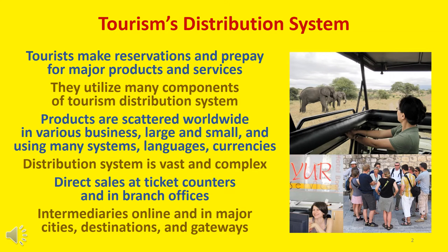Because tourists make advance reservations and prepay for many of the major products and services they will consume during their travels, such as cruises, escorted tours, airline tickets, hotel rooms, rental cars, and theater tickets, they utilize various components of the tourism distribution system. Tourist needs are many, and the products they will use are scattered all over the world in various businesses, both large and small, using many systems, languages, and currencies. Therefore, the tourism distribution system is quite vast and complex.